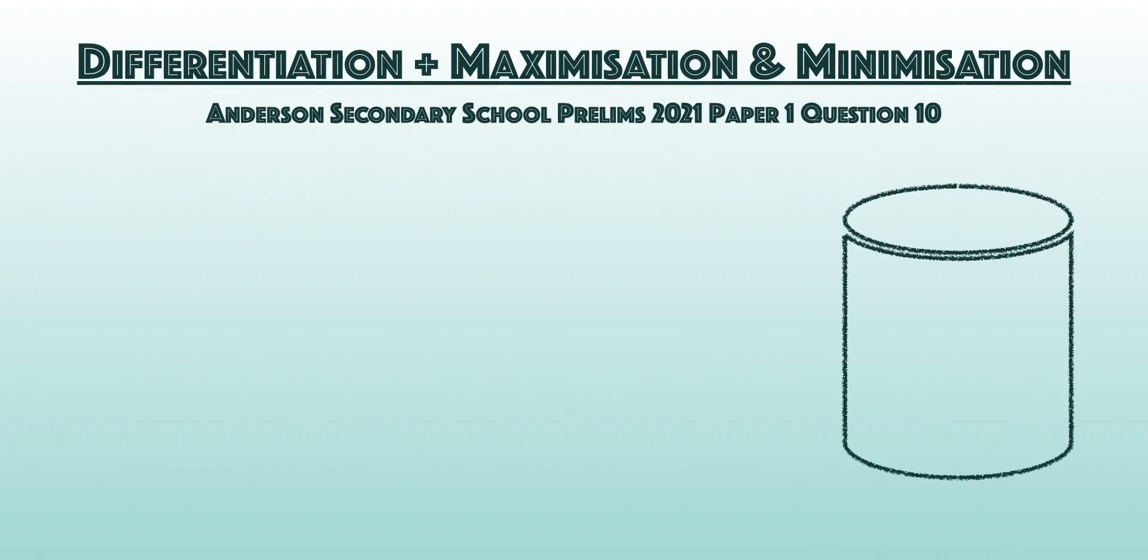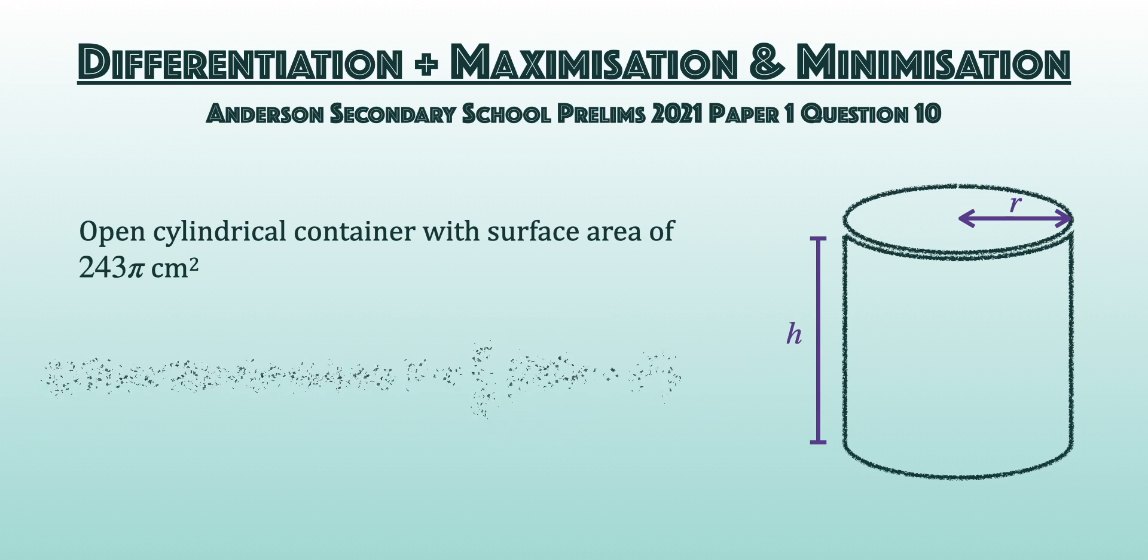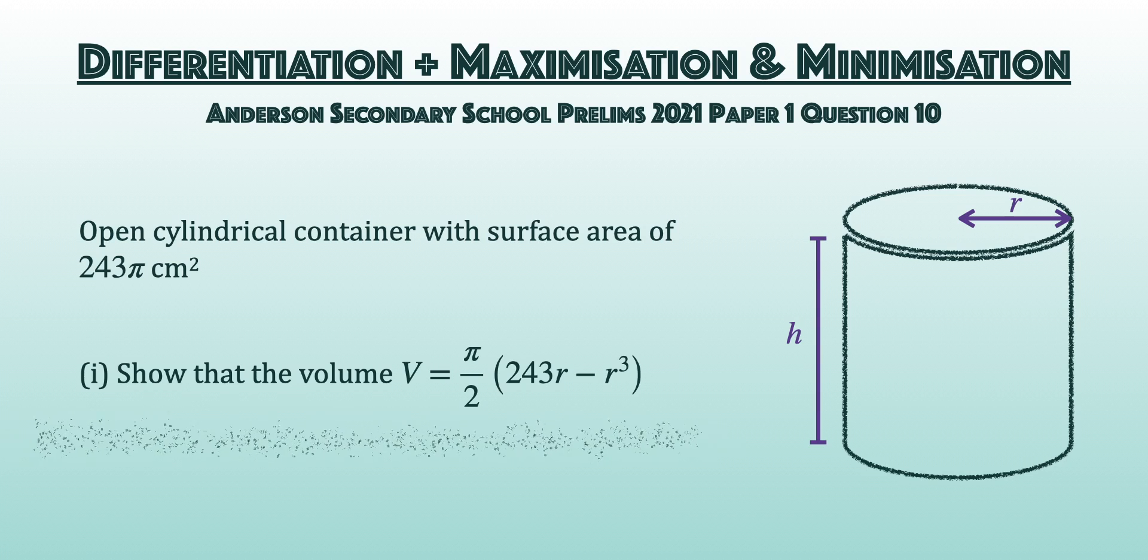A factory is tasked to design an open cylindrical container with a surface area of 243π cm². The radius of the cylinder is r cm and the height h cm. In part 1, show that the volume V cm³ of the cylinder is (π/2)(243r - r³). In part 2, find in terms of π the maximum volume of the cylinder.